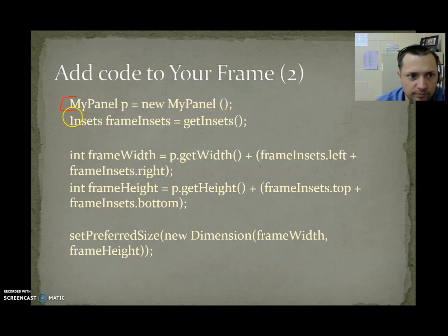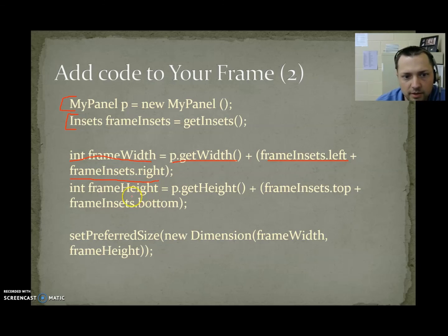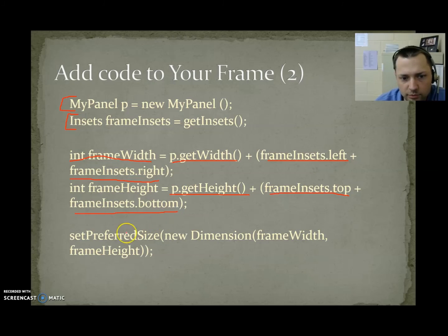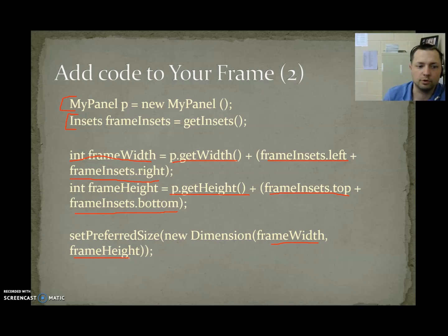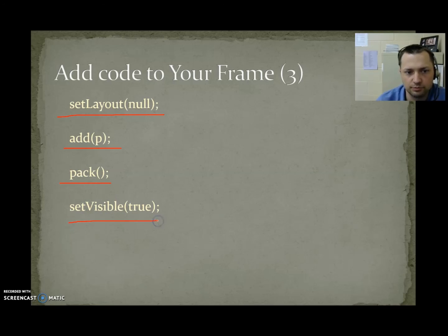After creating the panel — since all our art is done in the panel — we make the frame big enough to hold its decorations (borders, title bar) and the panel. Get the insets. The new frame width = p.getWidth() + insets.left + insets.right. The frame height = p.getHeight() + insets.top + insets.bottom. Then setPreferredSize(new Dimension(frameWidth, frameHeight)) — we use setPreferredSize instead of setSize because we'll call pack() again to adjust. Then setLayout(null), add the panel, call pack(), and setVisible(true).